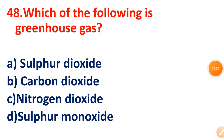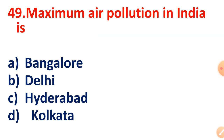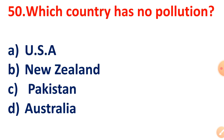Question 48: Which one of the following is a greenhouse gas? The answer is Carbon dioxide. Question 49: Maximum air pollution in India is in which city? The answer is Delhi.